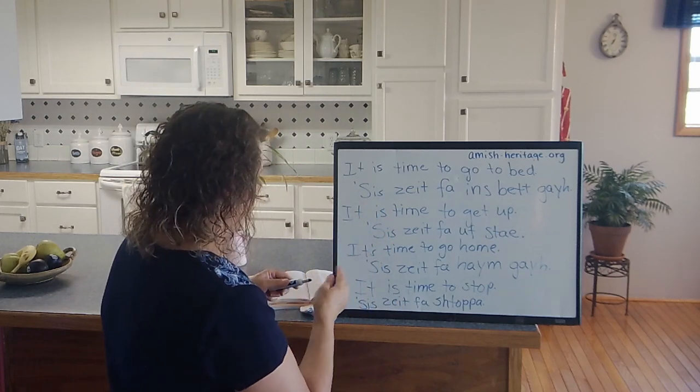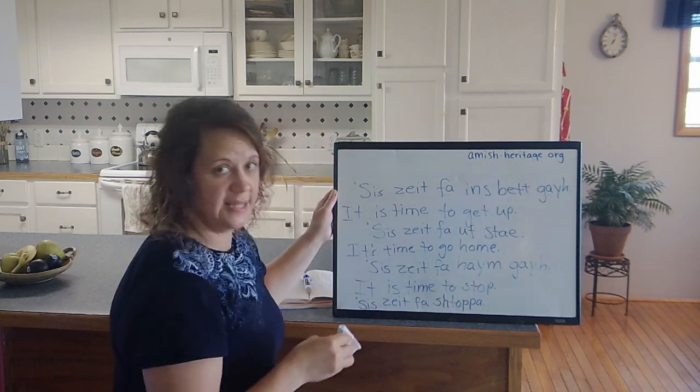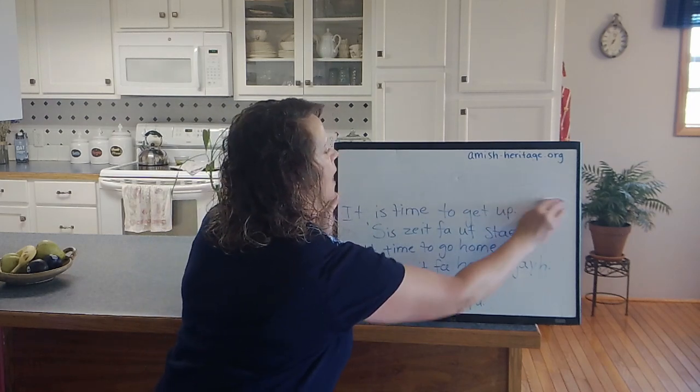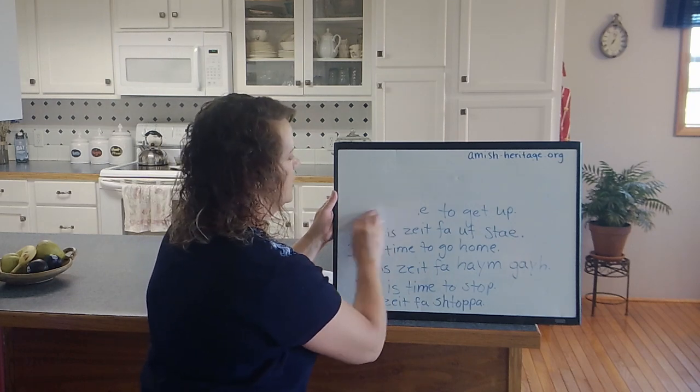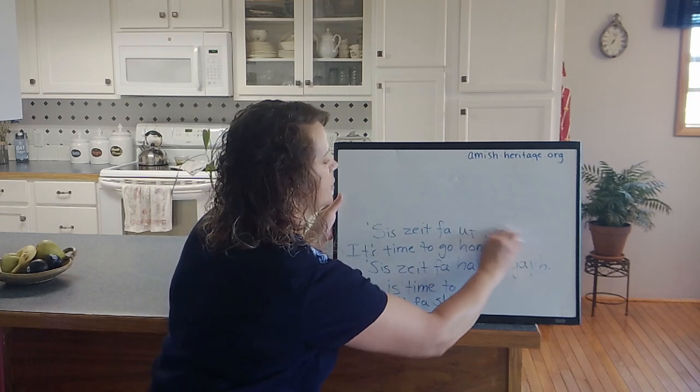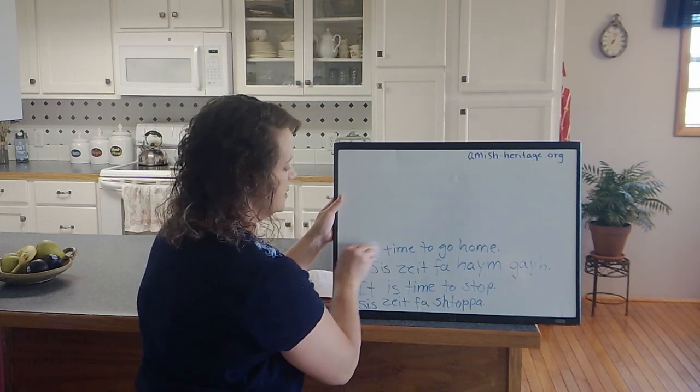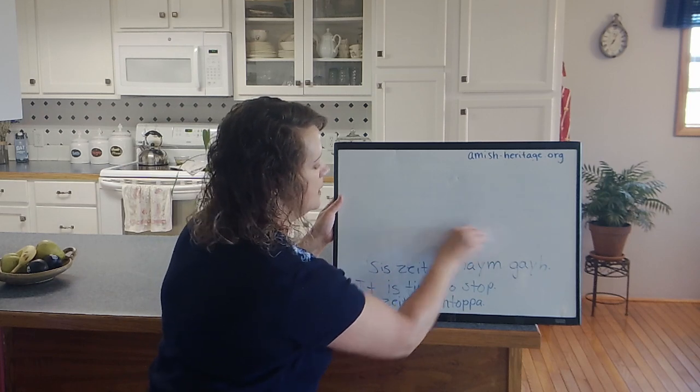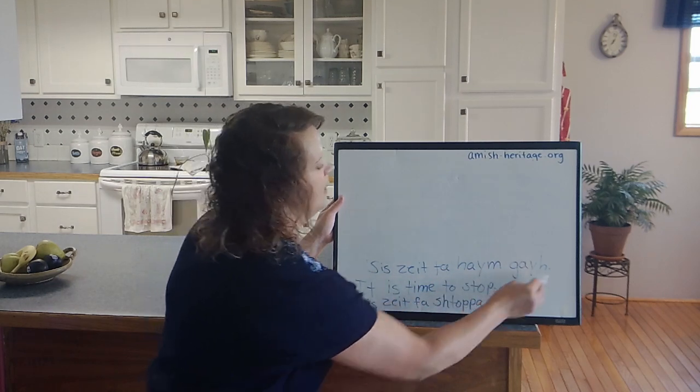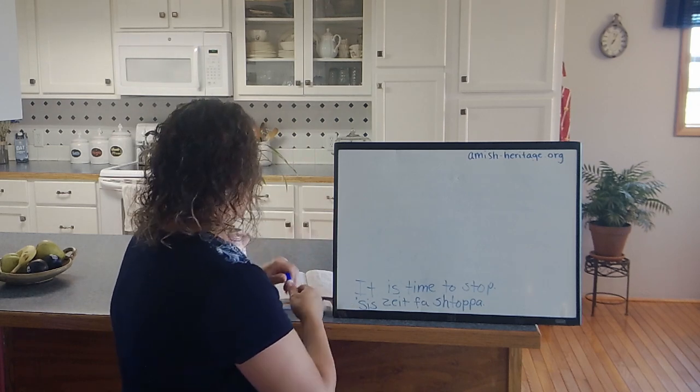So it is time to go to bed would be sis tight fa ins bet ga. It is time to go to bed, sis tight fa ins bet ga. Ga is go. It is time to get up, sis tight fa uff steh. You could say it's time to stand up or it's time to get up. It is time to go home, or it's time to go home, sis tight fa ham ga. Ham is home. You're saying it's time to home go, sis tight fa ham ga. It's time to go home. It is time to stop, sis tight fa steh pa. So those are a few phrases for today. I think that's where I'm going to stop.